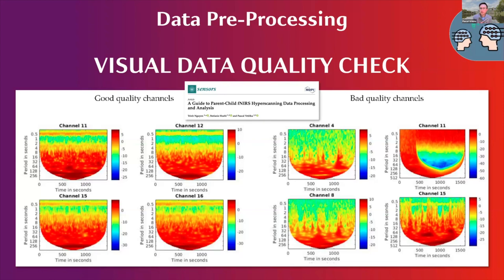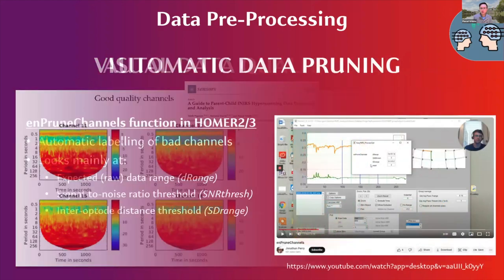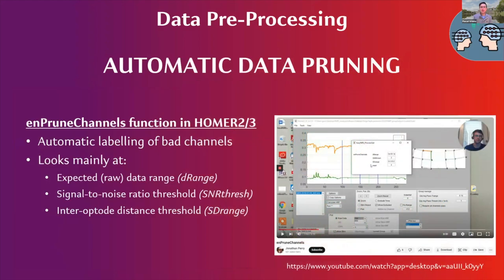Here on the right are examples of bad data — for channels four and eight there is no heartband, and something went quite completely wrong with data acquisition. For channel 15, there is a heartband but quite strong motion artifact spikes going into it so it sometimes disappears. We strongly recommend that after each acquisition you check the data right away, because if you acquire 50 participants and only then do the check, you might have to throw out quite a lot of data, especially if there are problems with the equipment.